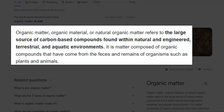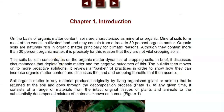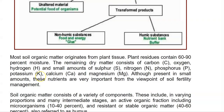What is the source from which you are getting the organic matter? It is mainly from the plant. Apart from that, animals can also contribute to the organic matter of the soil. Organic matter in a cultivated soil can range from trace to 30%. Soil organic matter mainly originates from the plant tissue and it contains 60 to 90% of moisture.